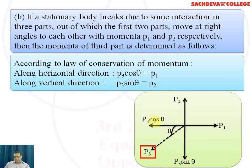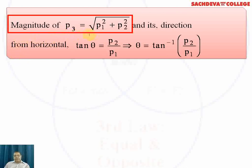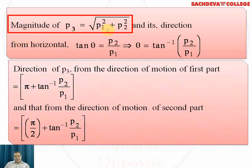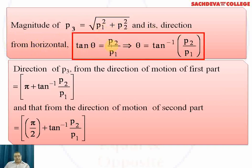The momentum p3 is resolved into two components: p3·sinθ and p3·cosθ. Using the Pythagorean theorem, the magnitude of p3 is √(p1² + p2²). The direction angle θ from the horizontal is given by tanθ = p2/p1, so θ = tan⁻¹(p2/p1).